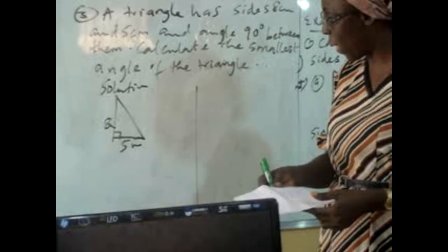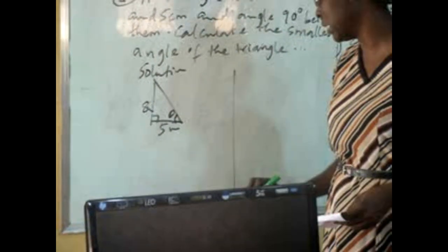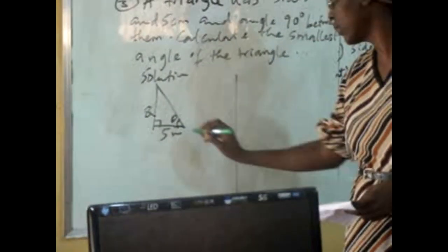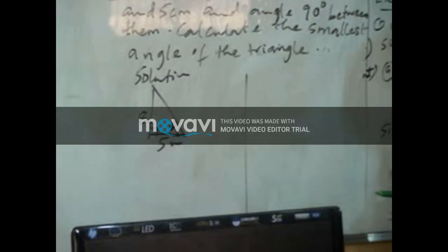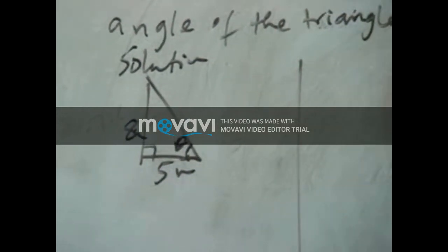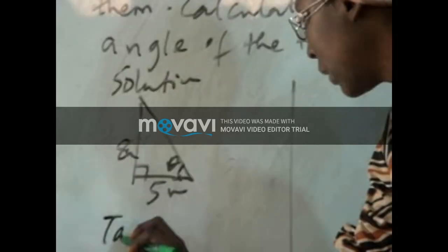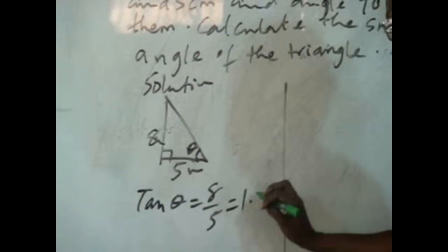Then you are told to find the smallest angle. So if I take this one as my theta, I have my O, I have my A. This has got my opposite, this has got my adjacent. So if I have tan theta, I have theta as I said before, 8 over 5, this gives you 1.6.